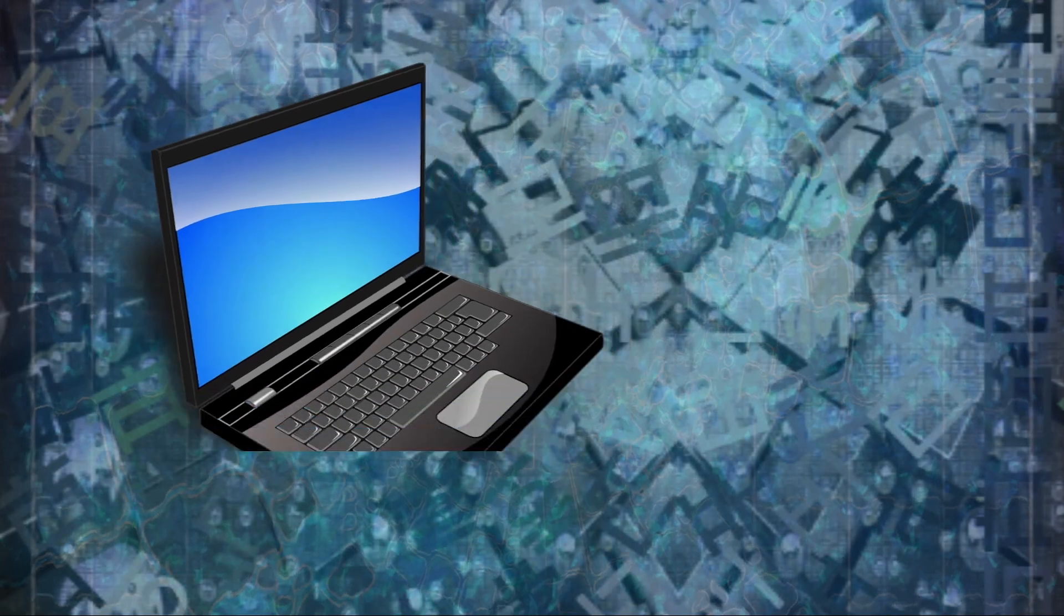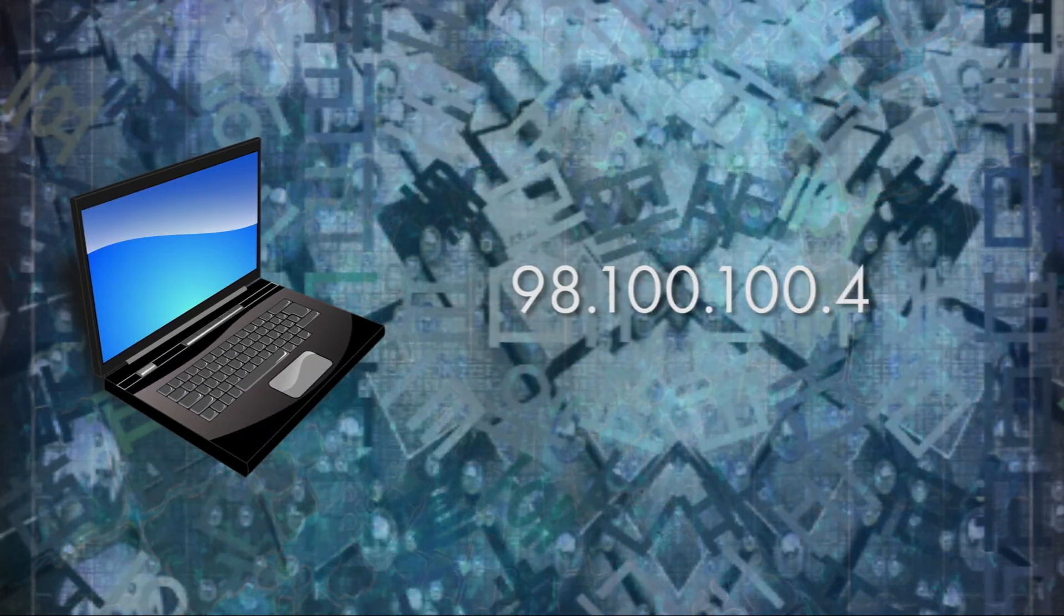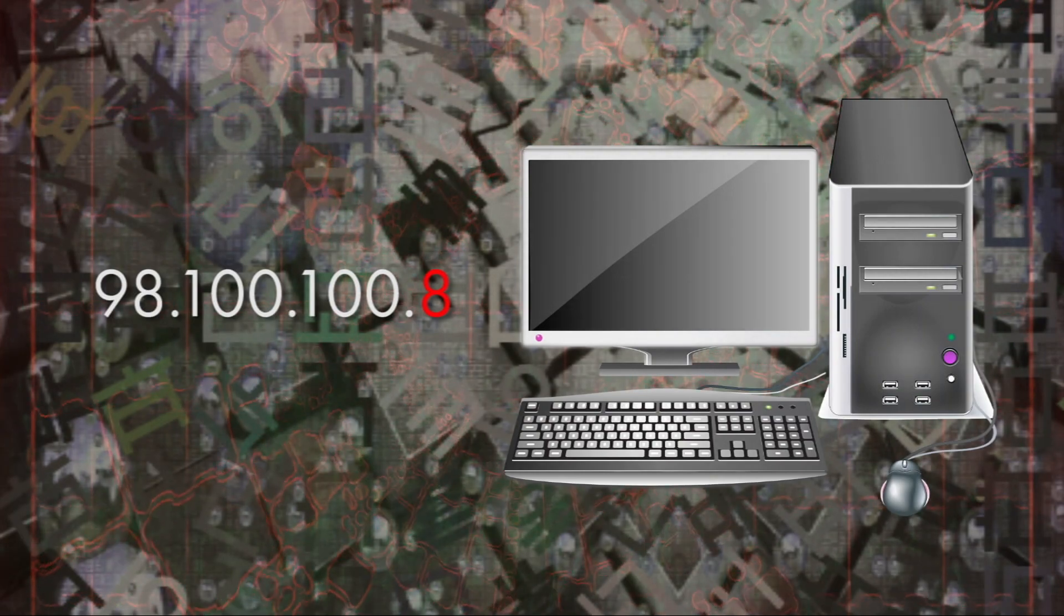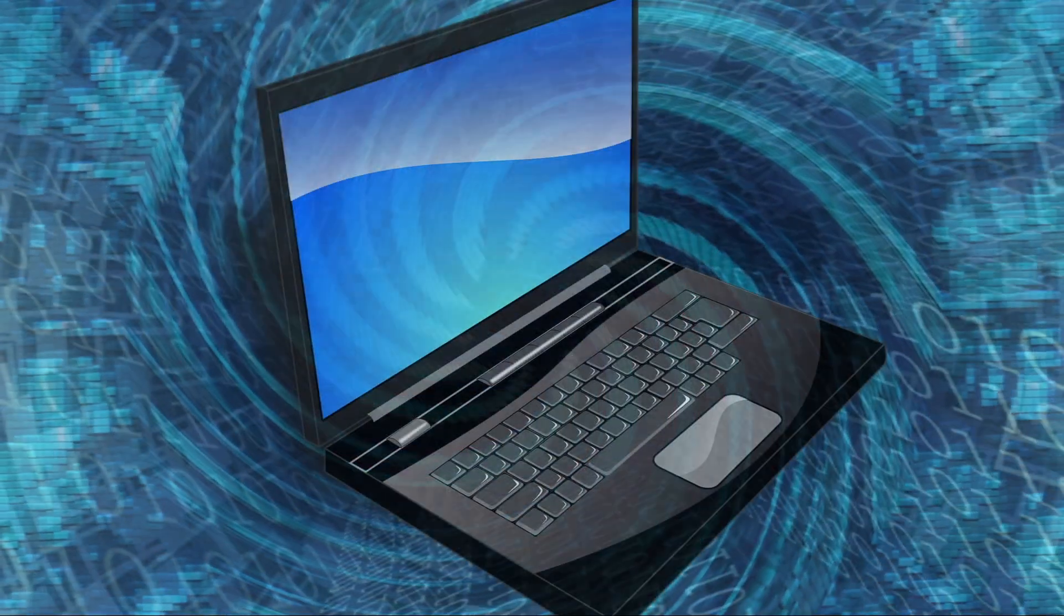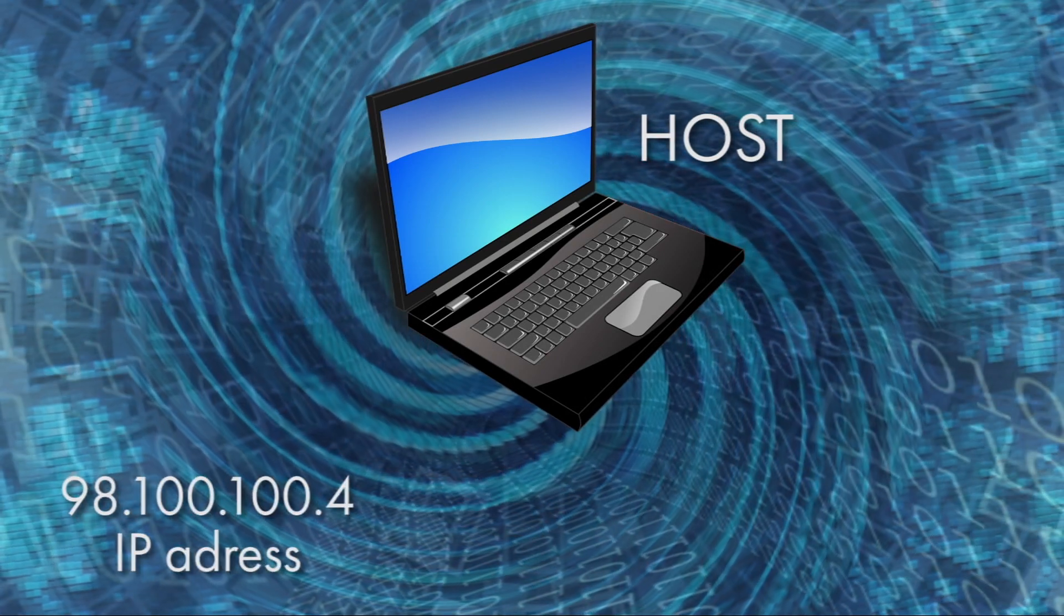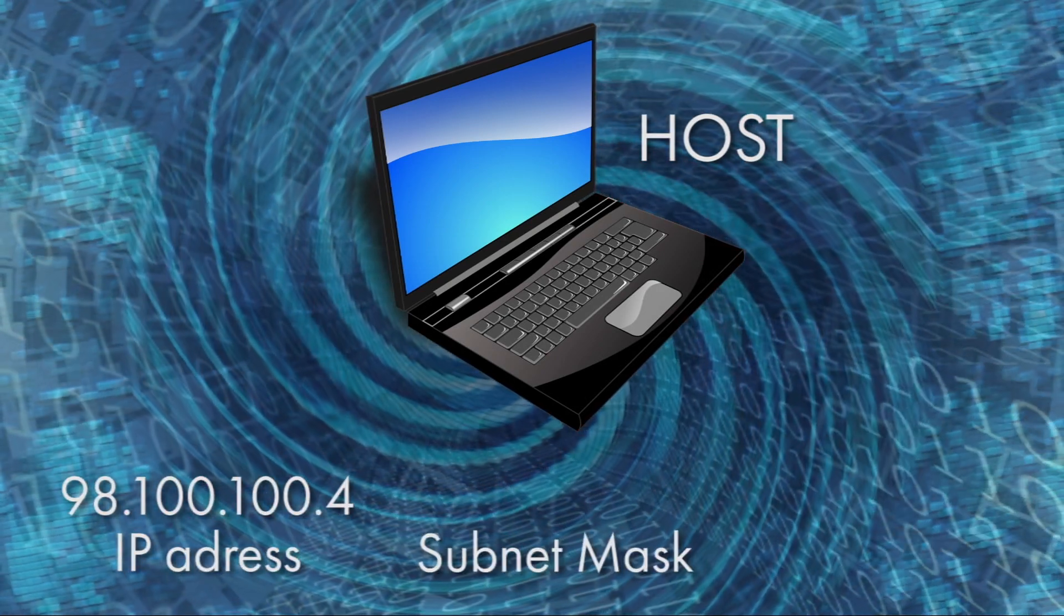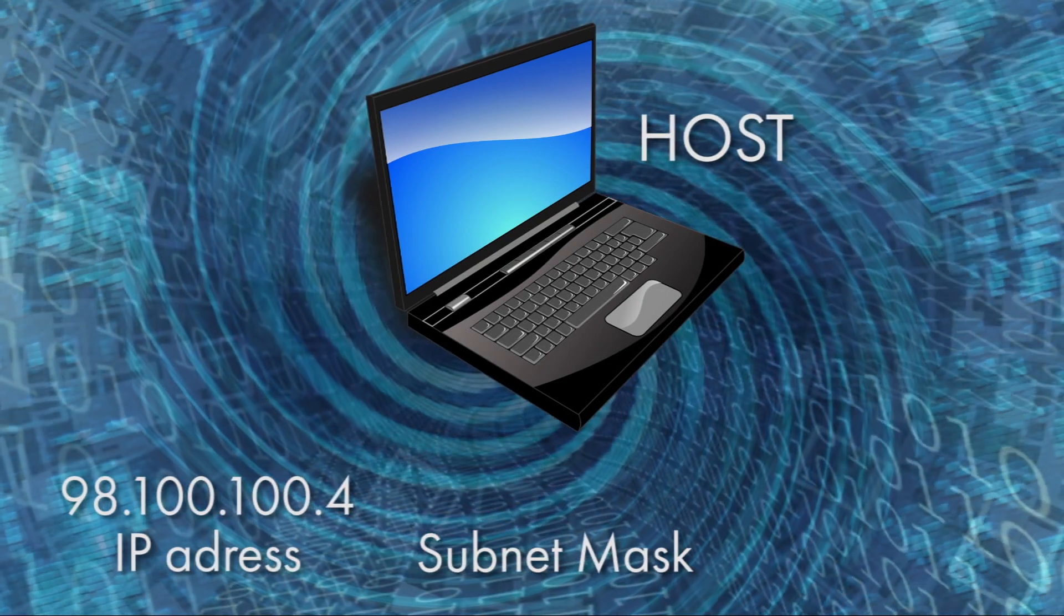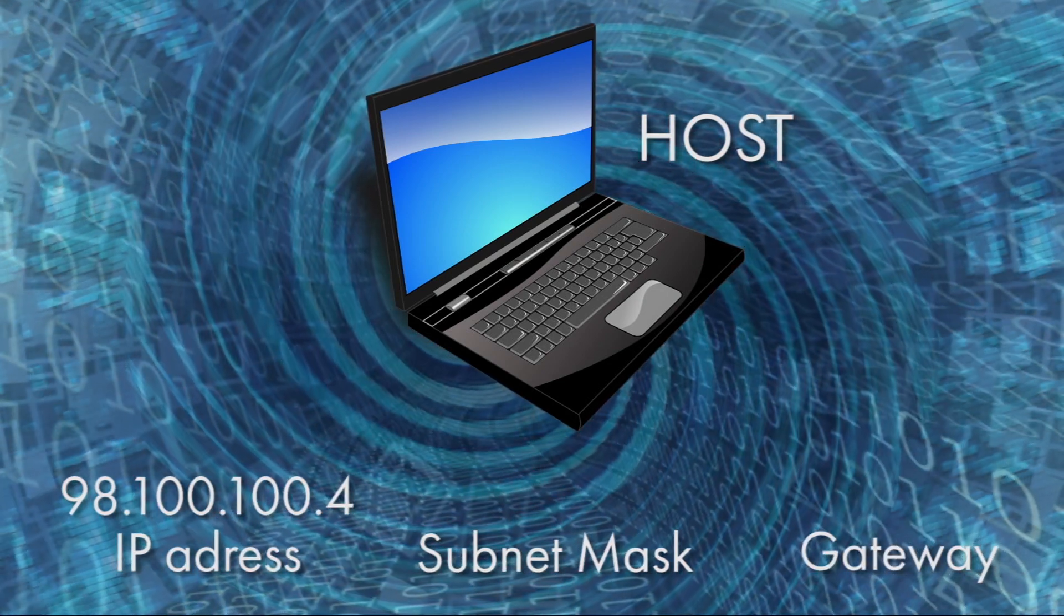Let's say I'm sending a packet from my computer at 98.100.100.4 to a computer down the hall at 98.100.100.8. My computer is a host, which means it has three things: an IP address to identify what it is, a subnet mask, which is an operation that identifies which computers it can send to directly, and a gateway to send any packets it can't send to directly.